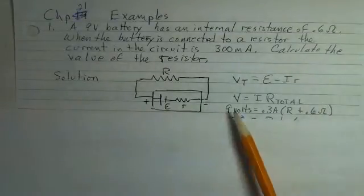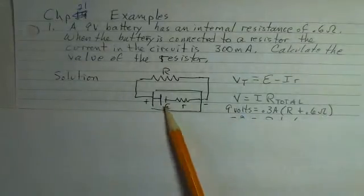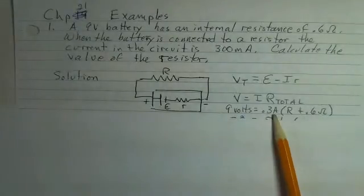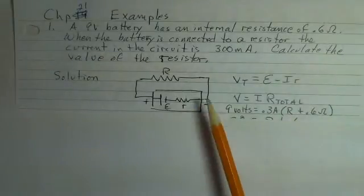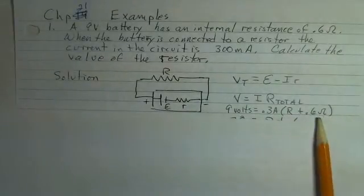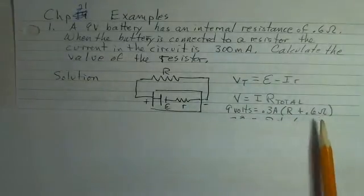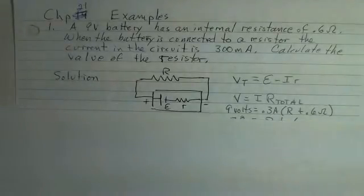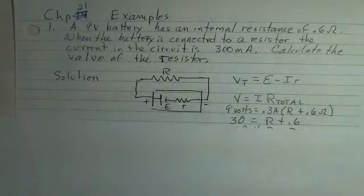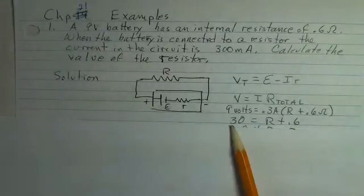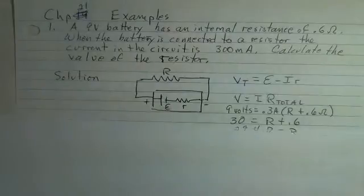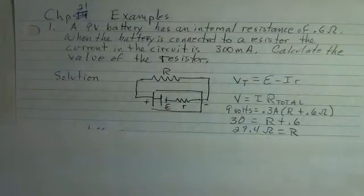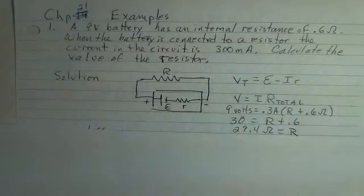9 volts is our EMF. 0.3 amps is what we've observed for the current value. The resistance is the external resistor plus 0.6 ohms, the internal resistance. So V equals I times R. We can divide both sides by the 0.3 and we get 30 on the left. We have R and 0.6 on the right side. We subtract the 0.6. The resistance value is 29.4 ohms.